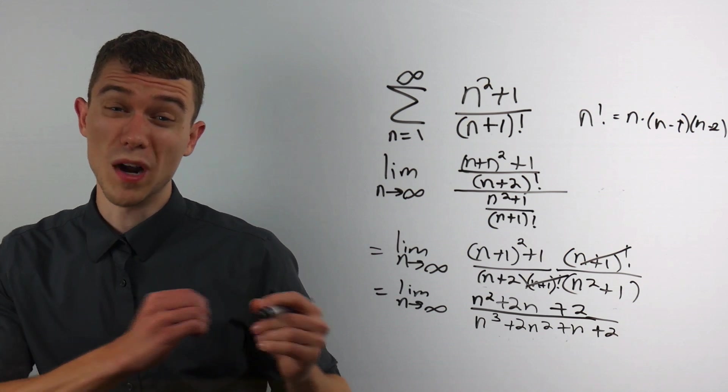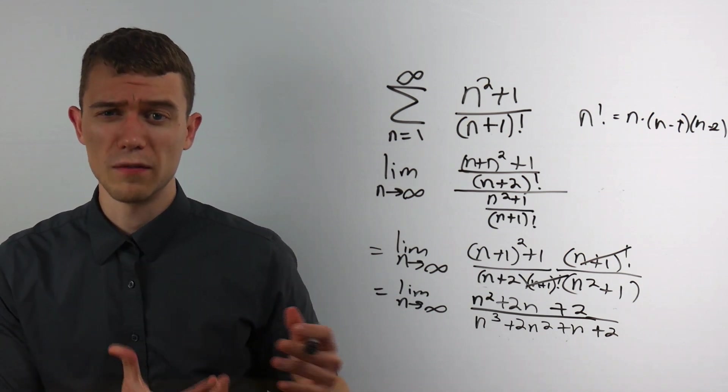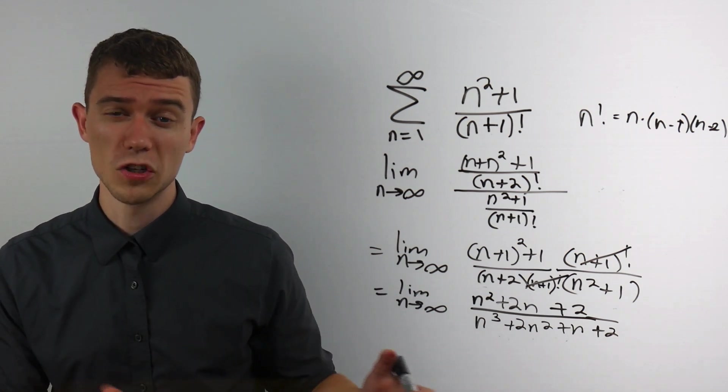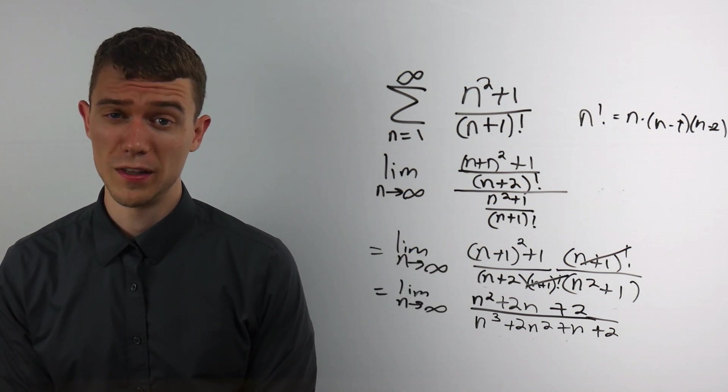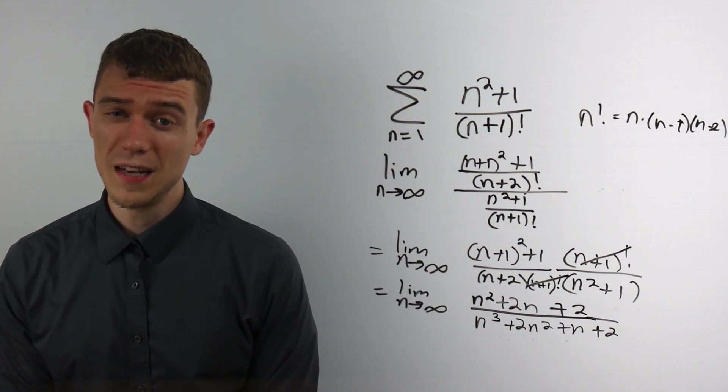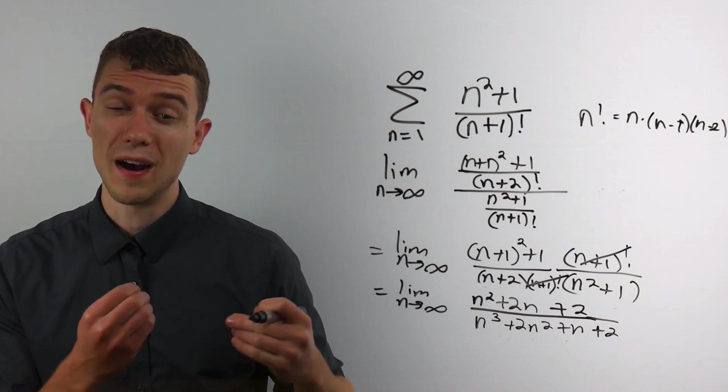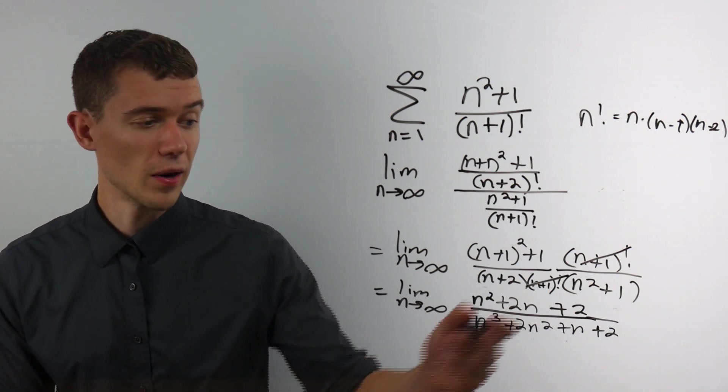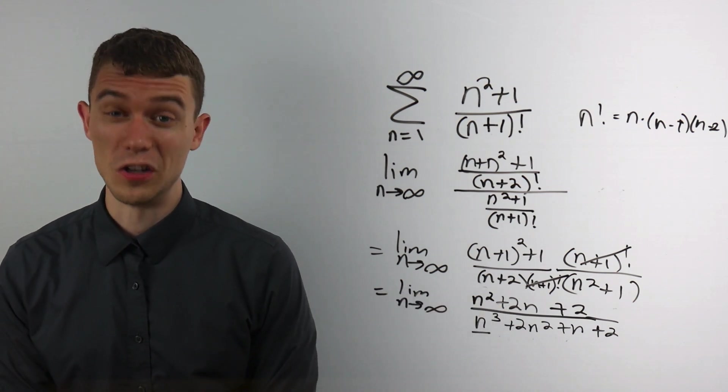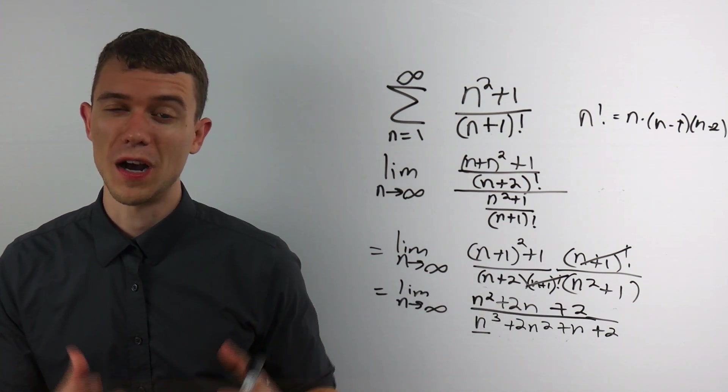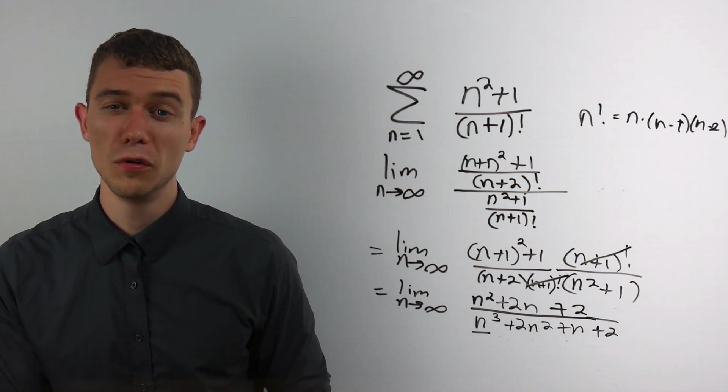And now what we have is what I would call a fairly straightforward limit problem. It's just a rational expression, a polynomial in the numerator, a polynomial in the denominator. The standard approach is to divide by the degree of the denominator. So I could divide every term by n cubed. We would get the same result.